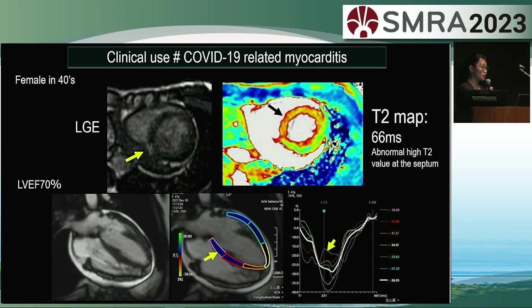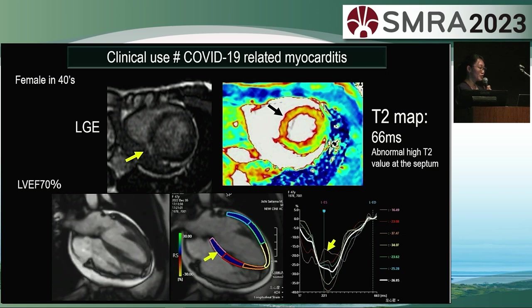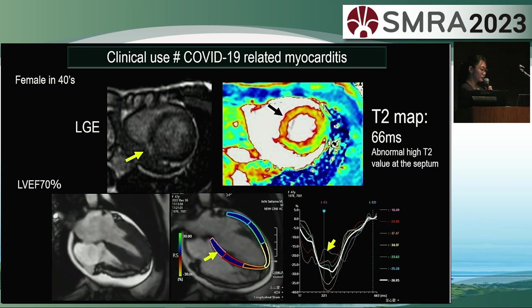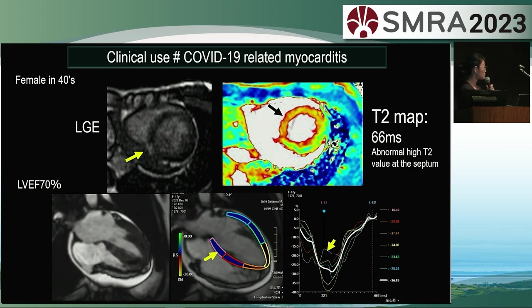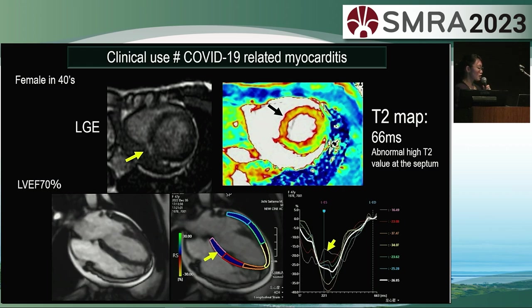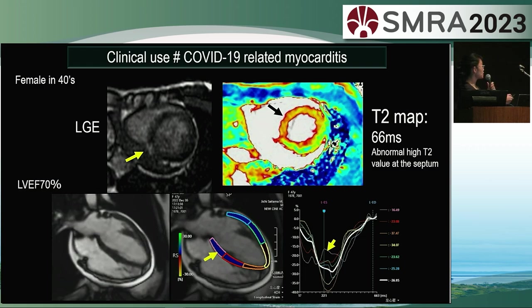This is a case of COVID-19 related myocarditis. MRI was taken after recovery from severe myocarditis in a female patient with COVID-19 infection. Her LVEF has improved. When we look at the strain, there is a focal reduction in the basal septum. LGE revealed a scar in the mid septum. The T2 value in the basal septum was also elevated at 66 milliseconds.